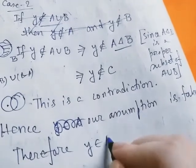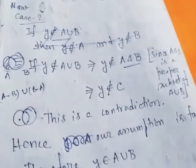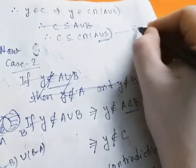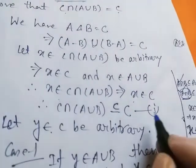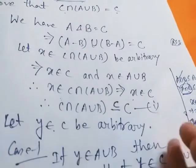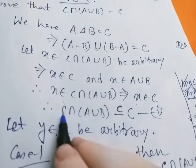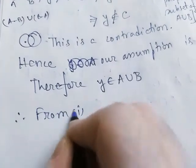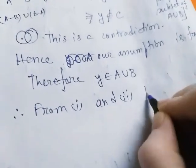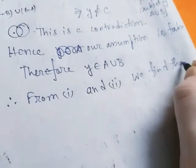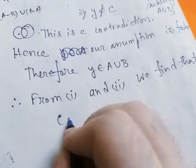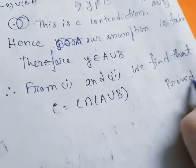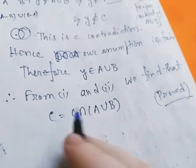Since y belongs to A union B, we already showed C is a subset of C intersection A union B — we name this (2). We already named the first result (1). From (1) and (2) we find that C equals C intersection A union B. Proved.